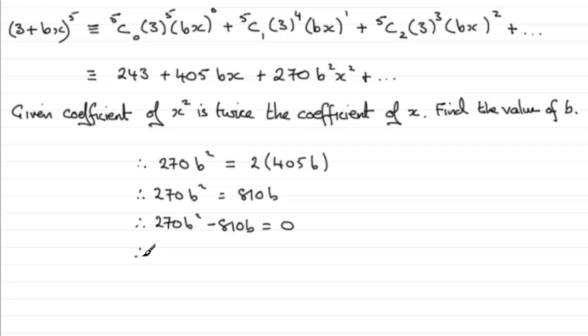And if we factorise this, we could pull out 270 as a common factor, and b. So we've got b times b minus 3, and that equals 0.